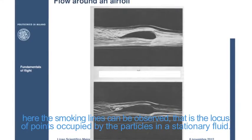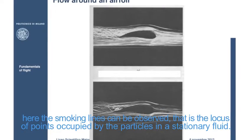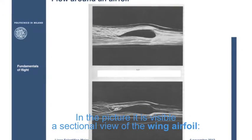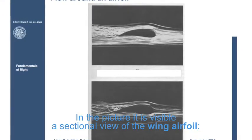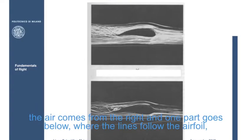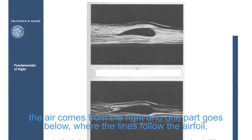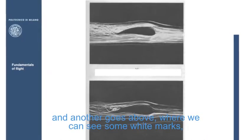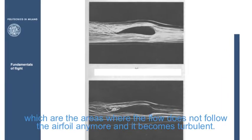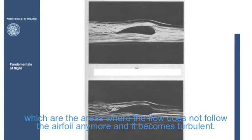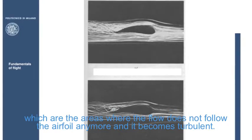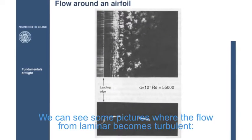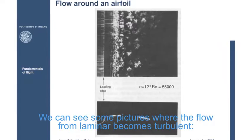The air is colored with smoke in order to see it better. The smoking lines can be observed, that is, the locus of points occupied by the particles in the stationary fluid. In the picture, is visible a sectional view of the wing's airfoil, white, and part of it passes below, where the lines follow the shape, while part goes above, where some white marks can be seen. The flow does not follow the shape anymore, and it becomes turbulent. We can see some pictures where the flow from laminar becomes turbulent.